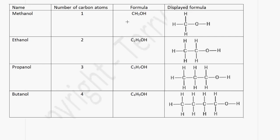Let's look at the homologous series for alcohols. The general formula is CnH2n+1OH. The first member of the series is methanol, which has one carbon atom. So it will be CH3OH — using the formula, 2 multiplied by 1 plus 1 equals 3 — and this is the displayed formula for methanol.